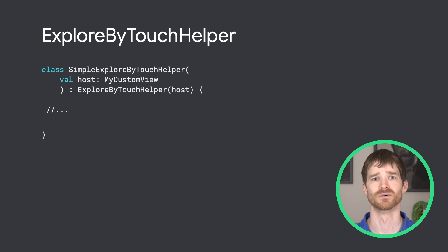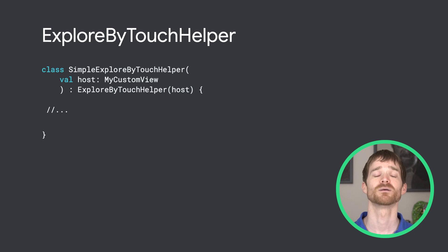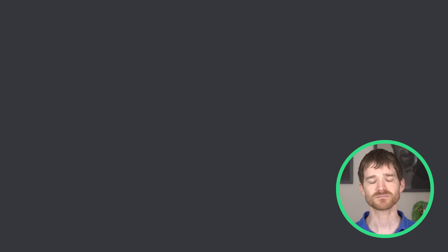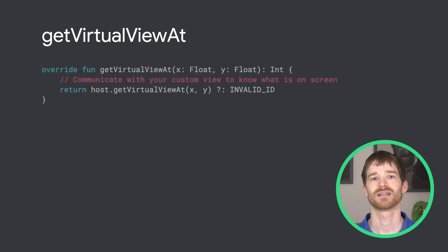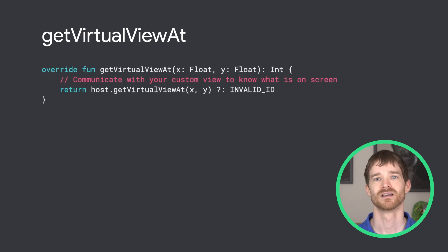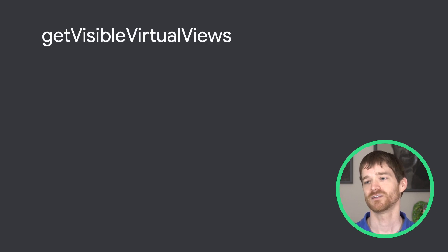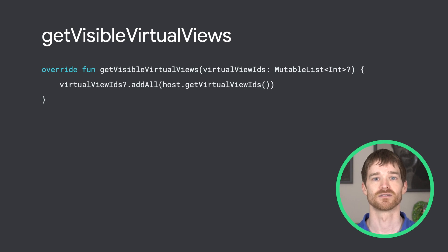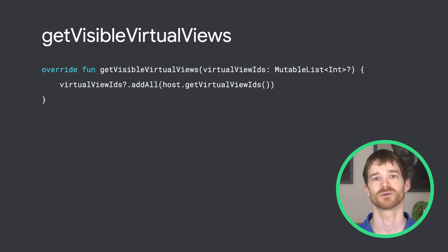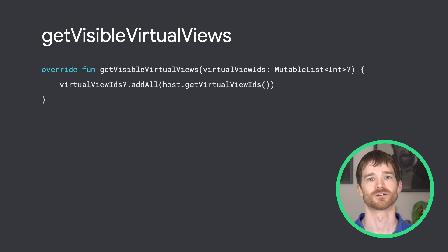It requires a view, so it's common to pass in your custom view as the single constructor argument. There are four important methods. First, getVirtualViewAt takes X and Y screen coordinates and needs to return the ID for the virtual view at that position. If there isn't one, return INVALID_ID. Second, getVisibleVirtualViews receives a list of integers that should be populated with the IDs of all virtual views currently visible on the screen. The IDs should be added directly to the list in the order of accessibility traversal.